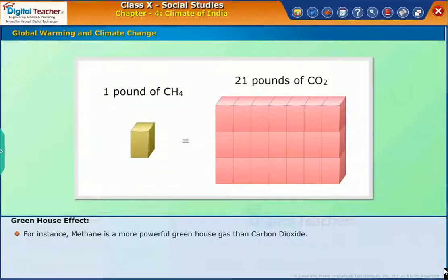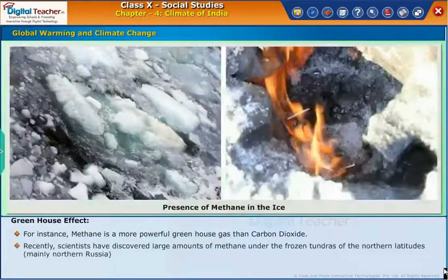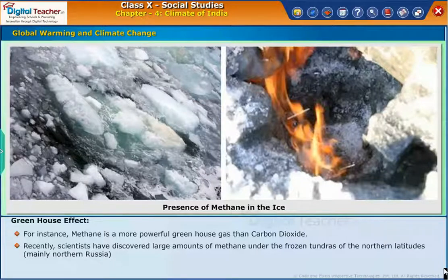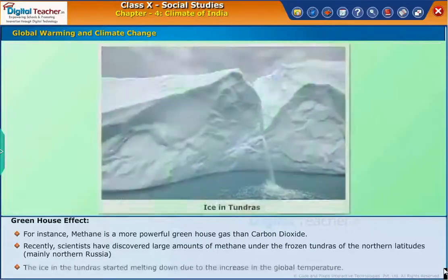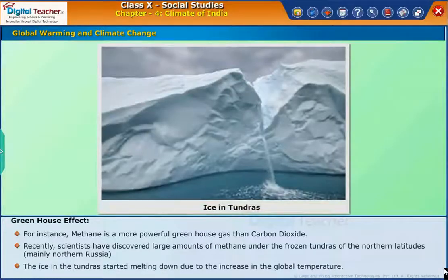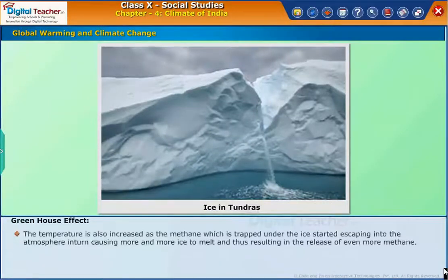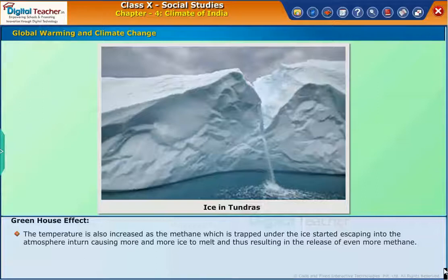For instance, methane is a more powerful greenhouse gas than carbon dioxide. Recently, scientists have discovered large amounts of methane under the frozen tundras of the northern latitudes, mainly northern Russia. The ice in the tundras started melting down due to the increase in global temperature. The temperature is also increased as the methane trapped under the ice started escaping into the atmosphere, in turn causing more and more ice to melt and thus resulting in the release of even more methane.